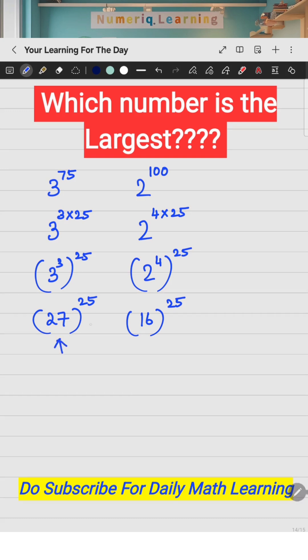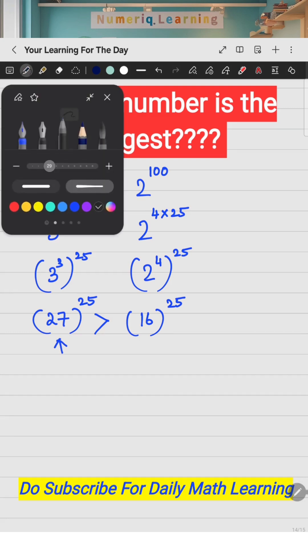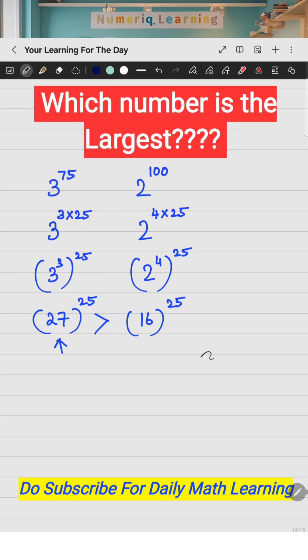Let's do another question. Suppose you have 5 raised to the power 22 and you have 4 raised to the power 33. How will you do this? Let's do the same way.